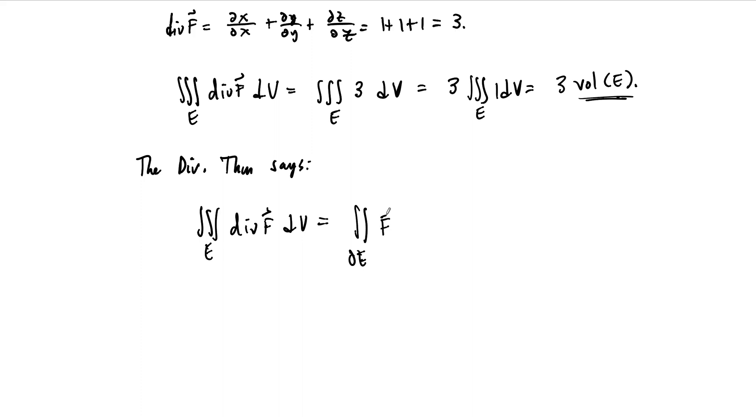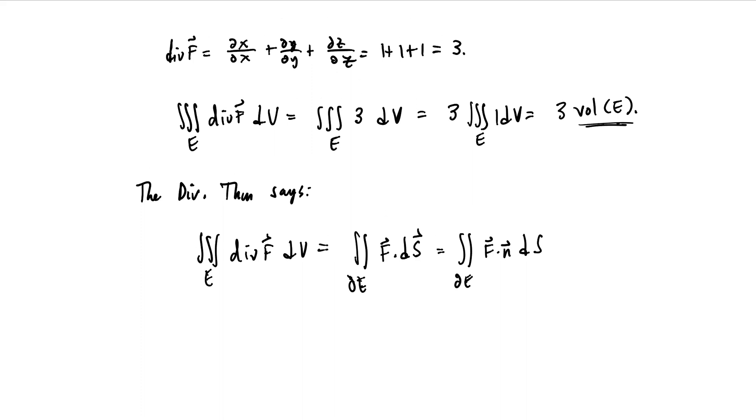So the flux, remember, is just written as f dot dS, where the S is bold S because this is a projection. Which, remember, if we want to compute this, we're not going to compute it here, but if we're going to compute this, then this is always computed as f dot n dS in the surface integral, so it's a projection onto the outward pointing normal vector.